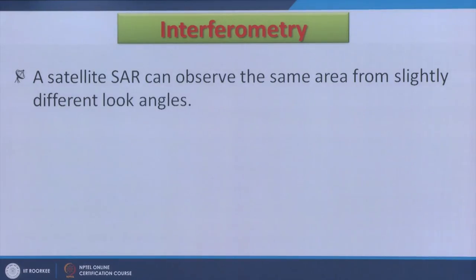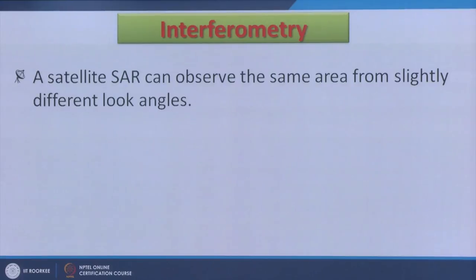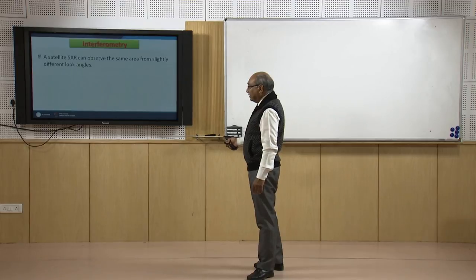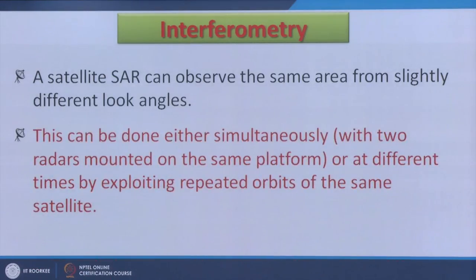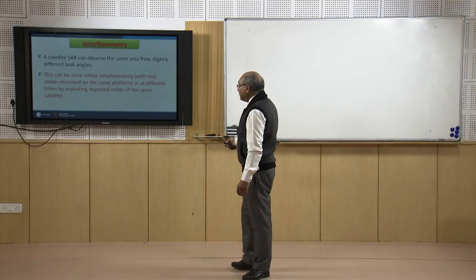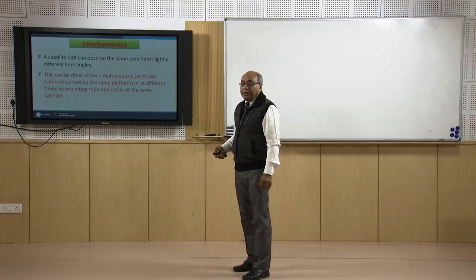Now, interferometry. Interferometry requires that the same area should have been observed at least twice — maybe from different angles or the same angle — but with possible changes on the ground in between. If this happens, we can measure or estimate the ground deformations that took place between those two dates when the two datasets were acquired. The satellite SAR can observe the same area from slightly different look angles. Even if there are some changes in look angle between revisits, deformation estimations can still be done very accurately.